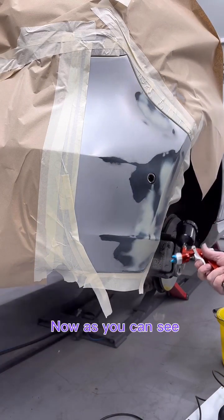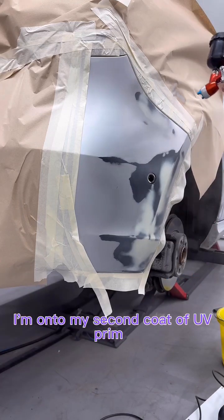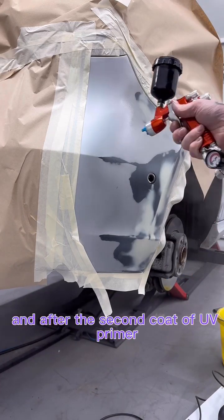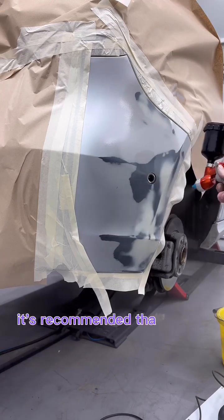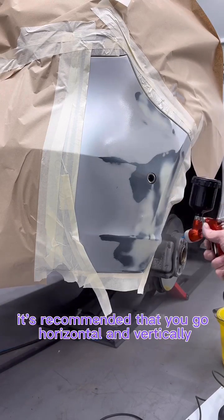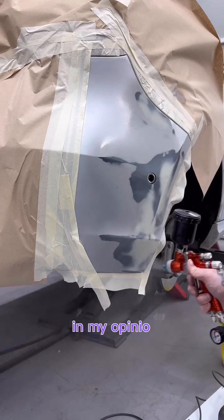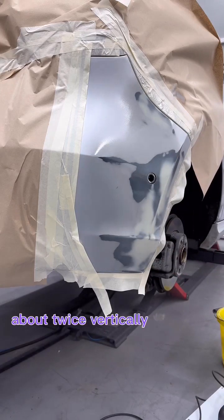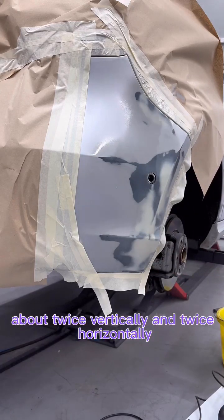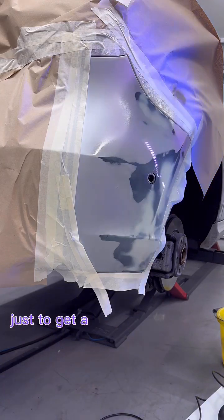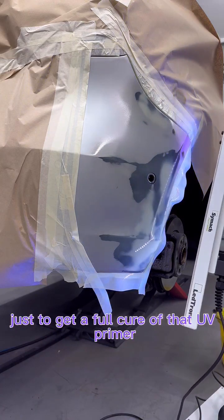Now as you can see I'm onto my second coat of UV primer. After the second coat it's recommended that you go horizontal and vertically, in my opinion about twice vertically and twice horizontally, just to get a full cure of that UV primer.